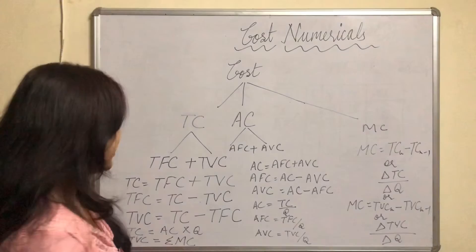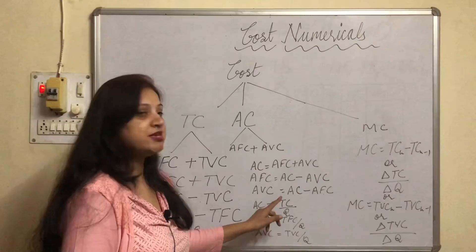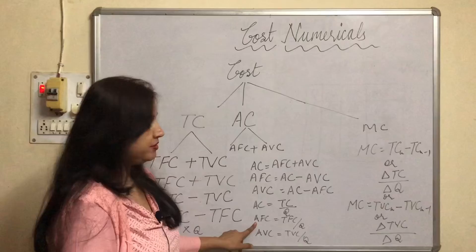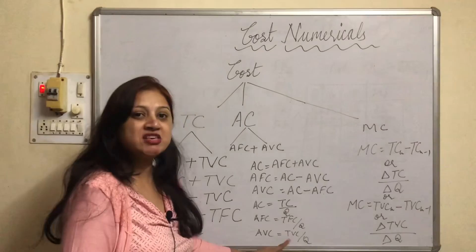Then as TC can be found with the help of AC, like that AC can also be found with the help of TC. AC equals TC divided by Q. And if you want to find AFC then AFC is TFC upon Q, AVC is TVC upon Q.